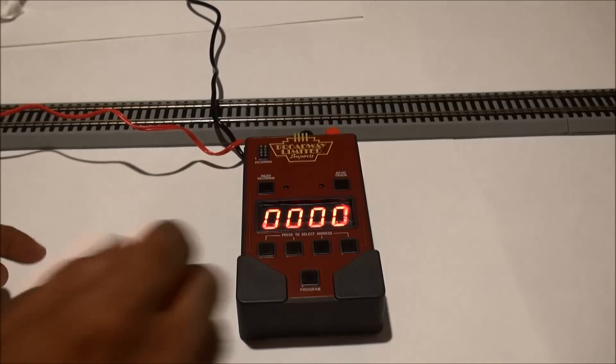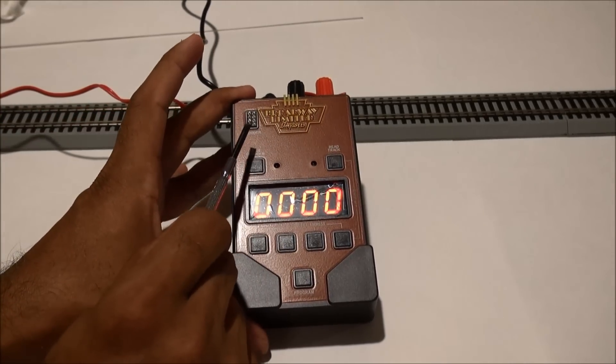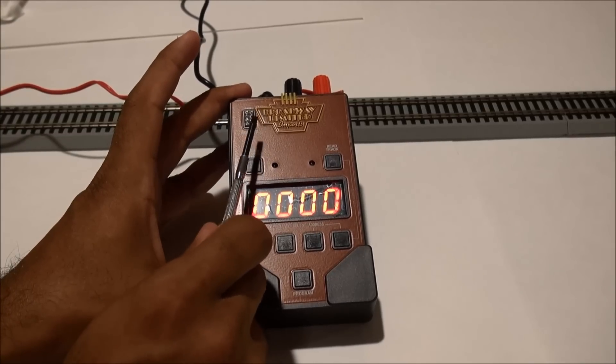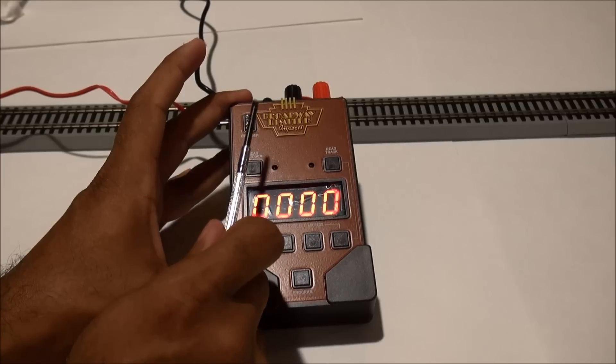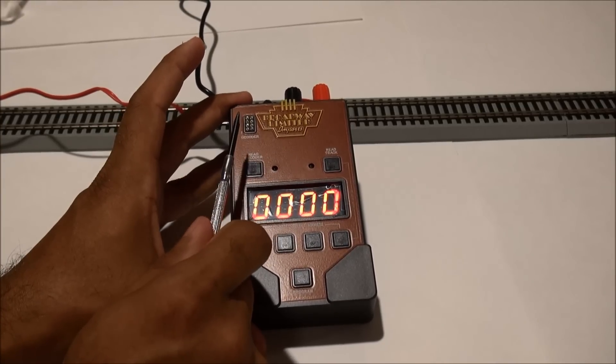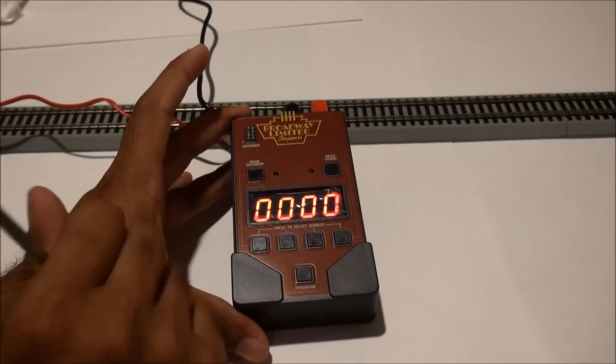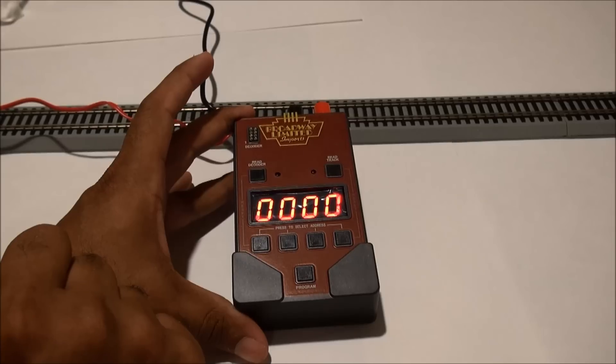And then you see 000 displayed on the address changer. Now up here in the left hand corner, you'll see an 8-pin decoder plug-in. Those are for the decoders, obviously the 8-pins, that you can program prior to installing them in your DCC locomotives.